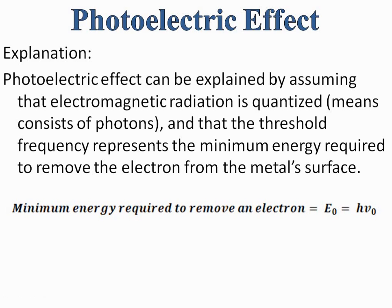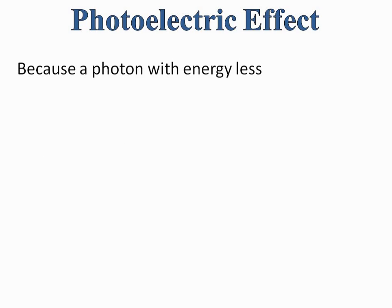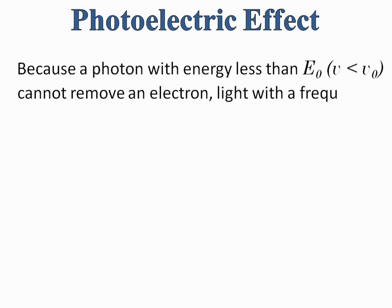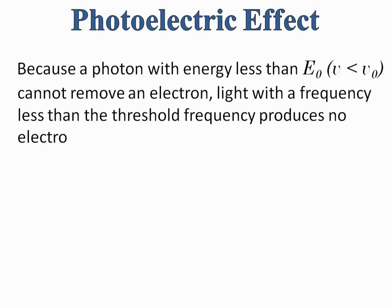The minimum energy required to remove an electron from the metal surface is E naught, which is equal to h times nu naught. E naught represents the energy required to remove the electron, possessed by the photon, and the photon has minimum threshold energy when it has minimum threshold frequency nu naught. A photon with energy less than E naught cannot remove an electron, so light with frequency less than the threshold frequency produces no electrons.